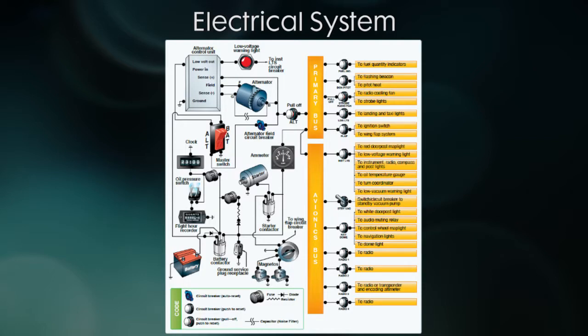Now on most systems we have an ammeter or a voltmeter. They measure the rate of discharge of the electrical system or the load on the system in amps. Most systems also have a low voltage light that will tell you when the alternator isn't producing power.